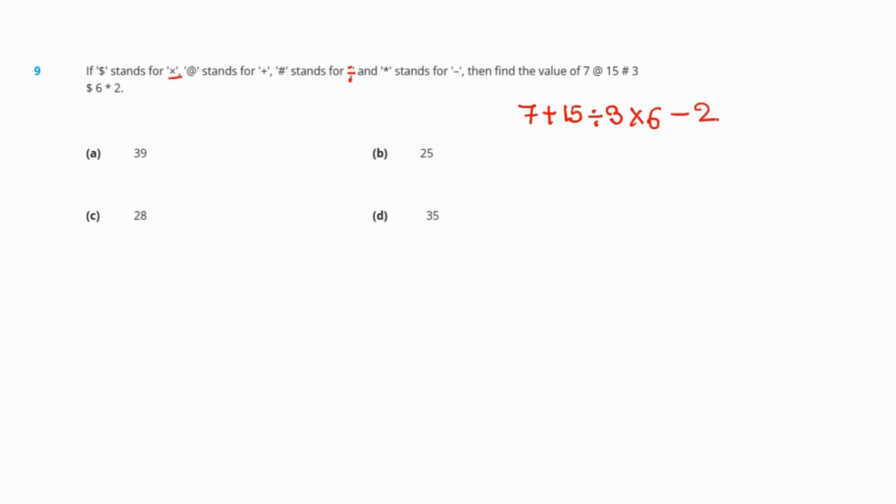So 7 plus 15 divided by 3 multiplied by 6 minus 2. First divide: 7 plus 5 times 6 minus 2, which is 7 plus 30 minus 2, equals 35. So 35 is the correct answer.